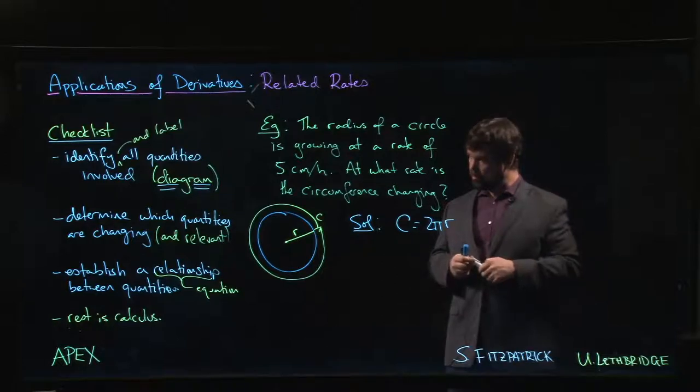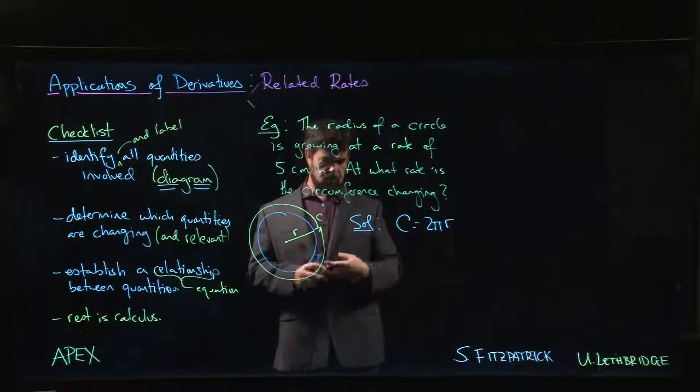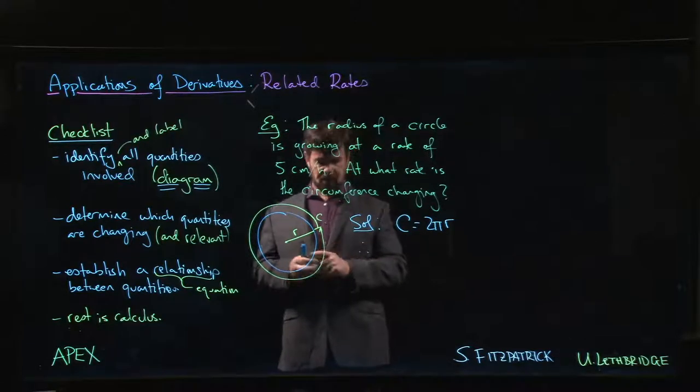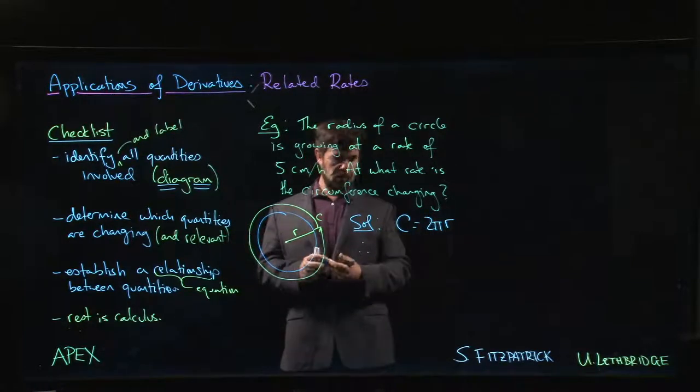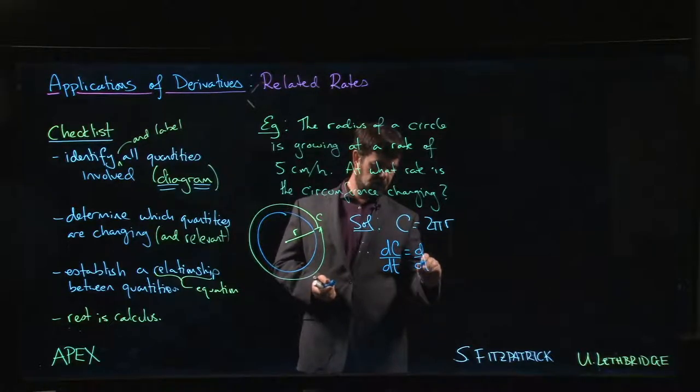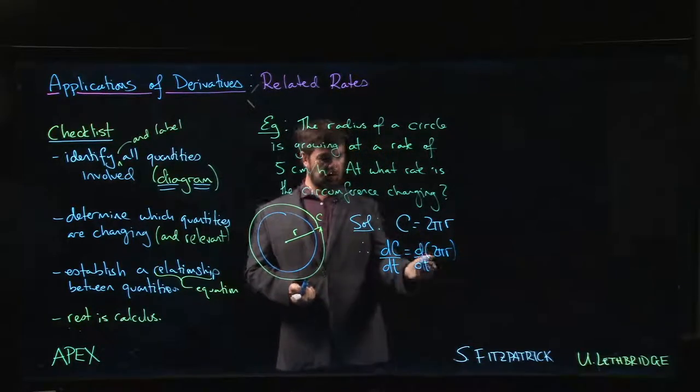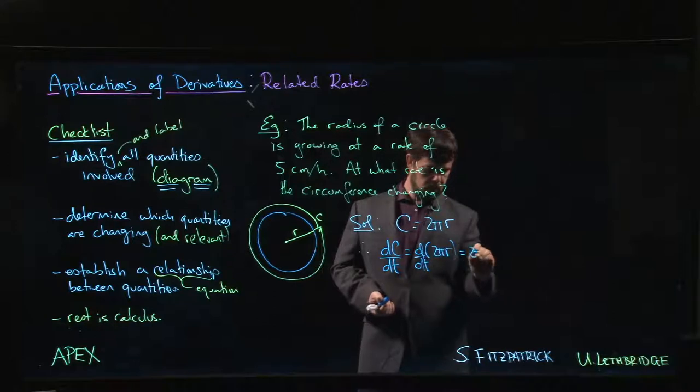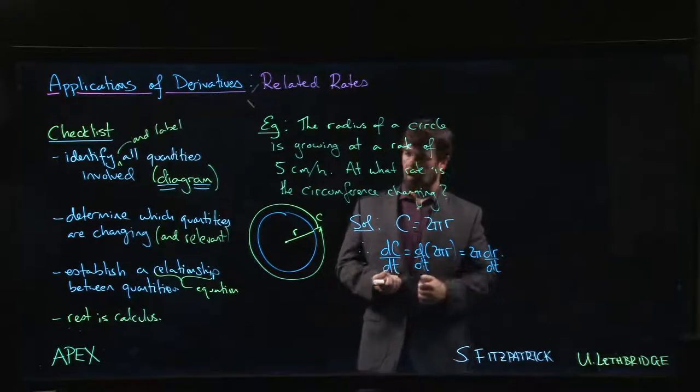So how do we do this? Well, we have our relationship, and like I said that's the hard part. Now we just take the derivative of both sides with respect to t. The derivative of the circumference with respect to t is the derivative with respect to t of 2π times the radius. But the constant rule says 2π can come out. This is just 2π times dR/dt. Simple enough.